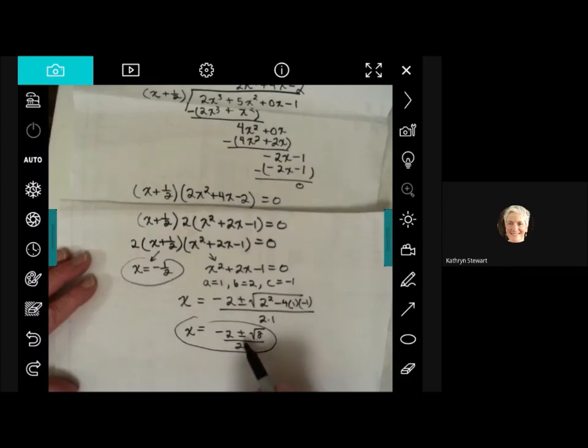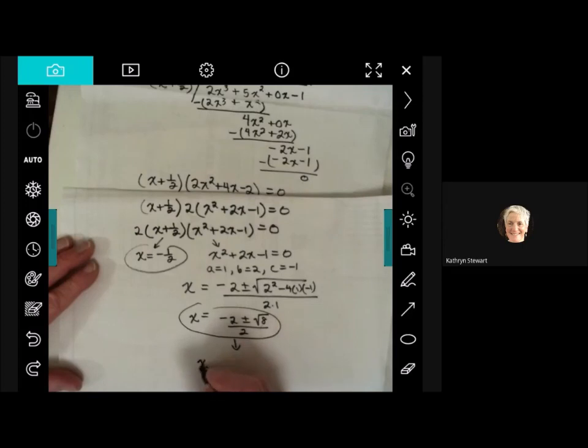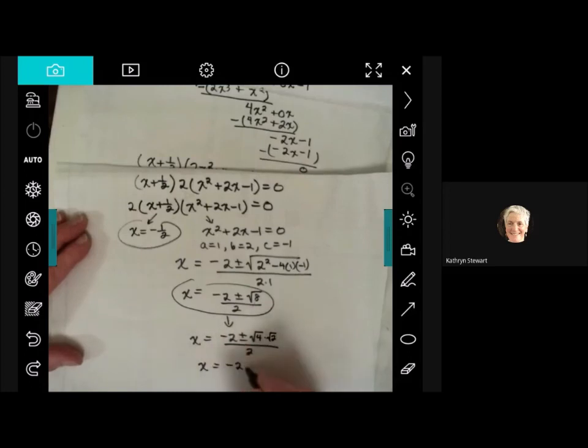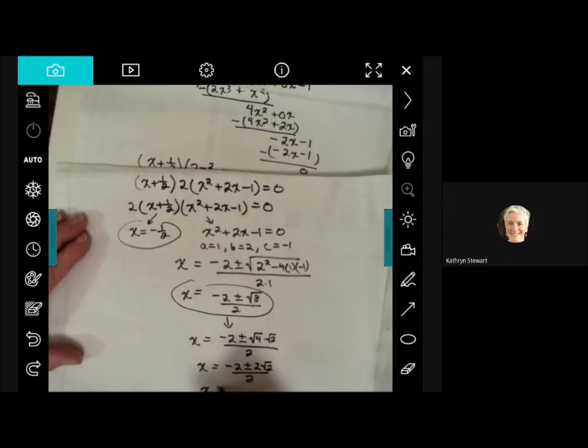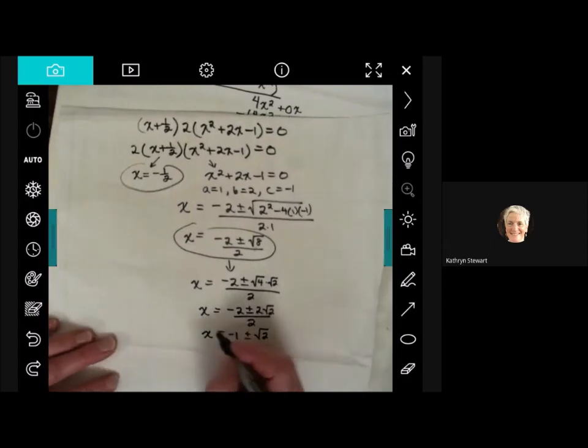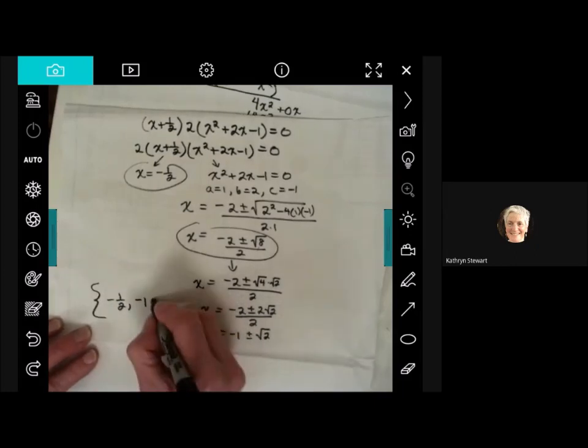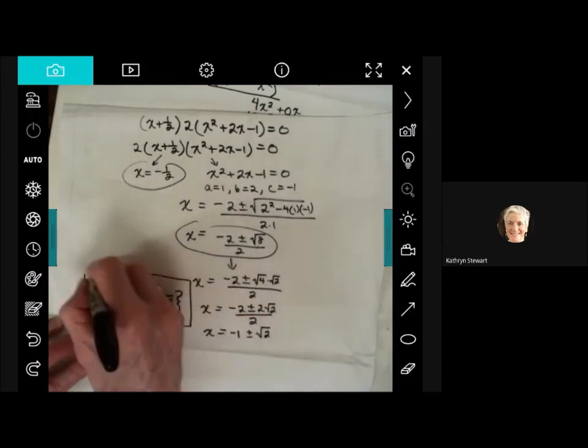So I have x equals negative 1 half, and then I have x equals negative 2 plus or minus the square root of 8 all divided by 2. Plus or minus are your two roots. But some of you are probably saying, I could simplify that. And you're right, I could. Let's go ahead and simplify this. So let's see, 8 is the same as the square root of 4 times the square root of 2, and square root of 4 is 2. I can really simplify. So now, since when you're dividing something with addition or subtraction, you have to divide each term. So that's negative 2 divided by 2, which is negative 1, plus or minus 2 root 2 divided by 2, which is the square root of 2. And there we have our three roots. I have negative 1 half, I have negative 1 plus the square root of 2, and I have negative 1 minus the square root of 2. And I have successfully found my three roots.